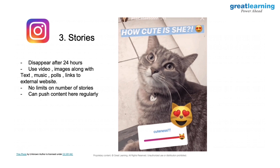Instagram Stories is a feature where the image or video disappears after 24 hours. You can use videos, images along with text, music, polls, and links to external websites. There is no limit on the number of stories since they disappear, and you can add tens or hundreds — people tend to update them regularly. Brands tend to engage with their followers through Instagram Stories a lot, constantly putting content that disappears and does not show in the newsfeed. This lets you push a lot of content — for example, if you're putting three or four newsfeed posts a day, in Stories you can create even shorter snippets, be more creative, and put more than four stories a day. Once they disappear, you can start with new stories.